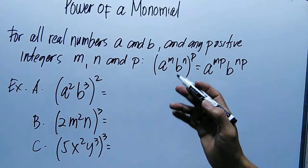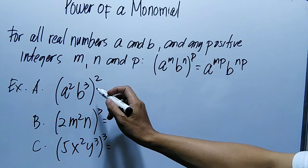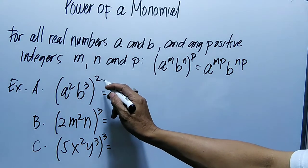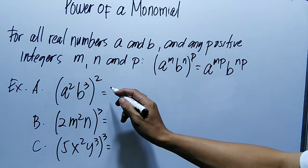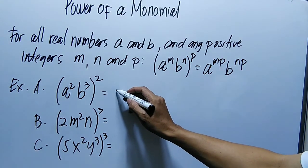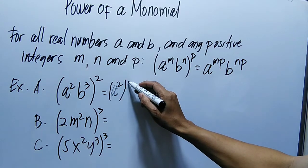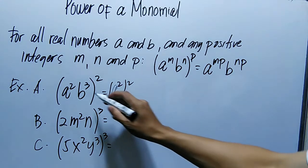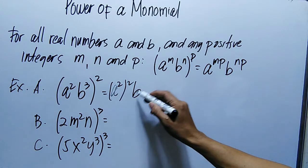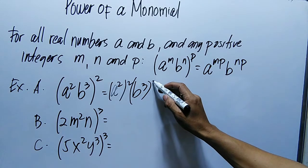So let's have example letter A. The quantity of A squared B cubed, the quantity raised to the power of 2. So ang gagawin natin dito, simplify muna natin yan. Kunin natin si A squared, tapos yung exponent natin na 2. Then si B cubed, meron din exponent na 2.